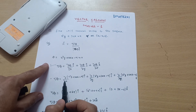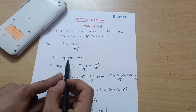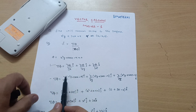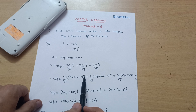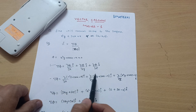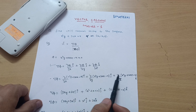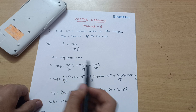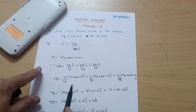So del phi is equal to (∂/∂x)(x²y + 2xz − 4) î + (∂/∂y)(x²y + 2xz − 4) ĵ + (∂/∂z)(x²y + 2xz − 4) k̂. I hope up to this it is clear.